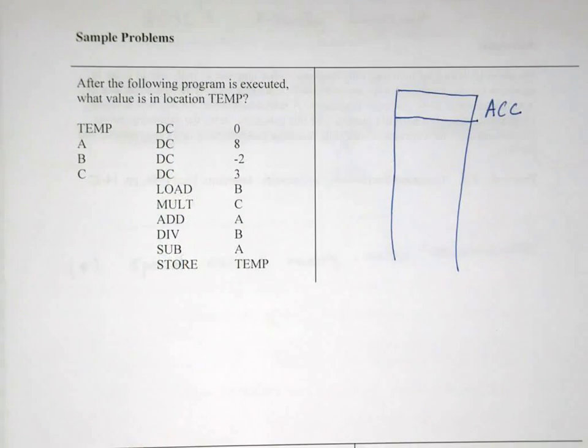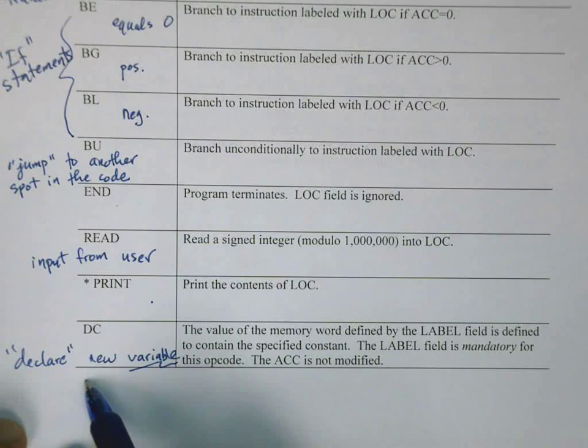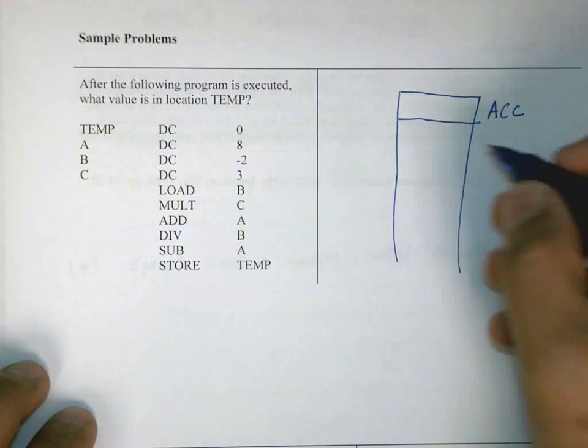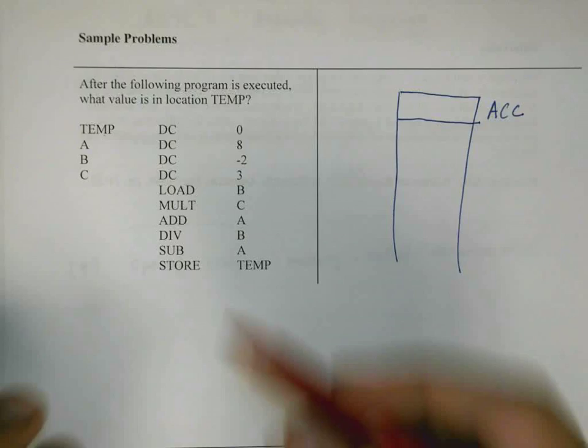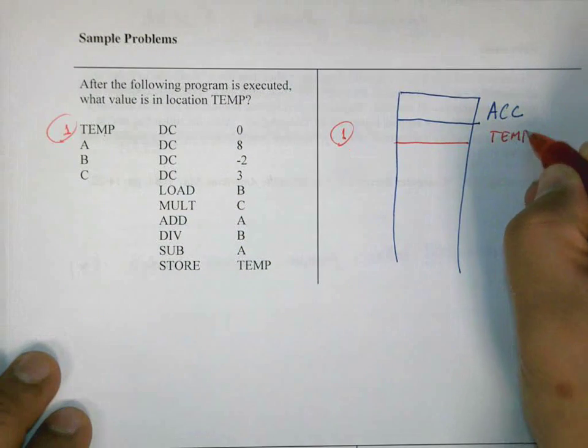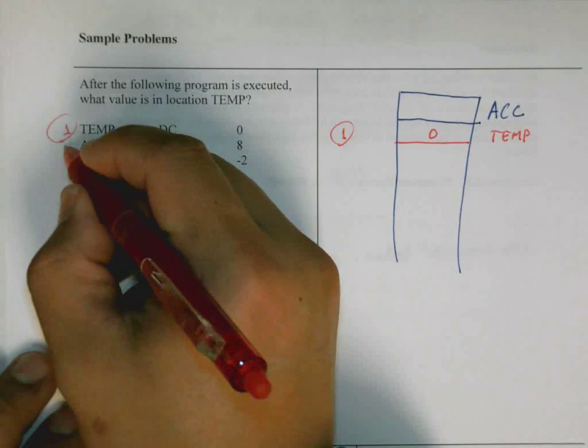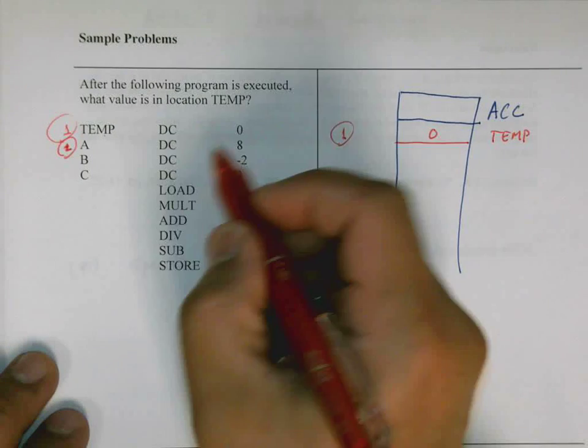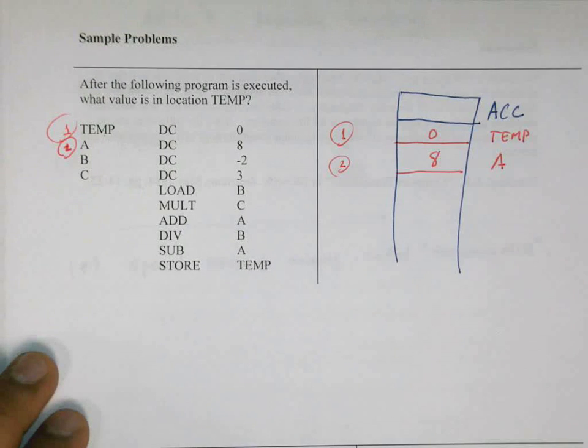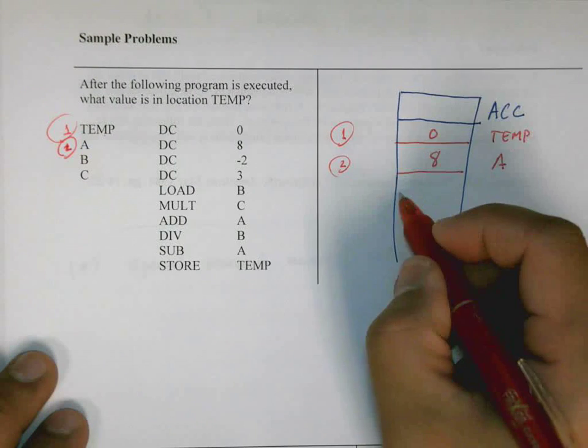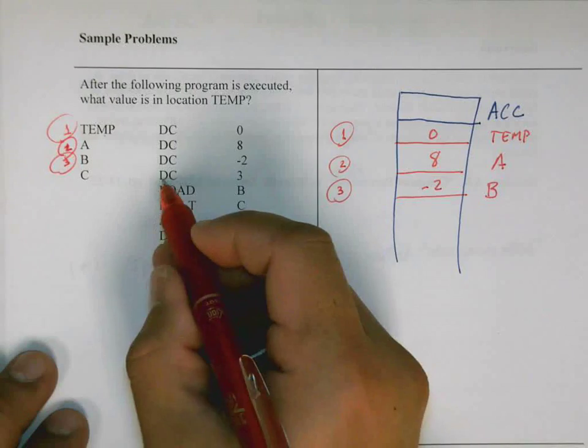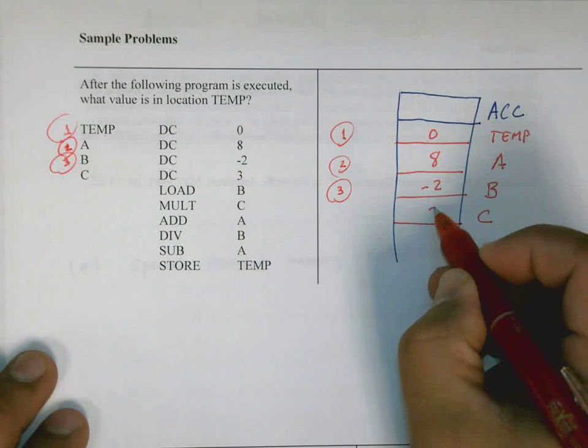So DC here, if you refer to your sheet, DC means to declare a new variable. So what we're declaring here is a variable called TEMP and we're storing zero in it. This line right here, we'll call this line one. What happens after line one is that there's a new variable called TEMP and the value zero gets stored in it. Next, we declare a variable A and place eight into it. Same thing, next line, declare a variable B and place negative two into it. So this is after line three. Declare a variable C and place the number three into it. So this is line four.